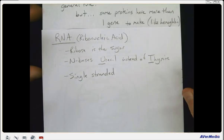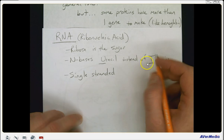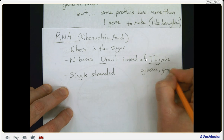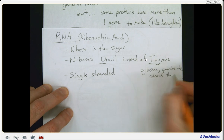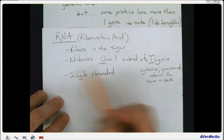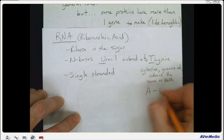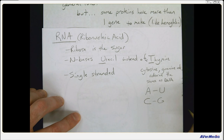Let's write down information about RNA, or ribonucleic acid. In RNA, there's ribose as the sugar instead of deoxyribose. The nitrogen bases include uracil instead of thymine, while cytosine, guanine, and adenine are the same as DNA. Also, RNA is single-stranded. For base pairing rules: in DNA, adenine codes for uracil in RNA — remember, uracil replaces thymine, which normally bonds with adenine. And cytosine codes for guanine, just like in DNA.